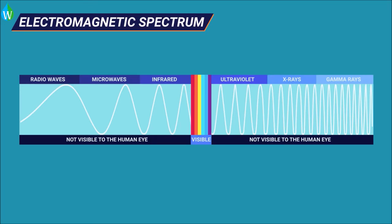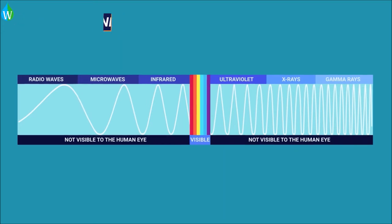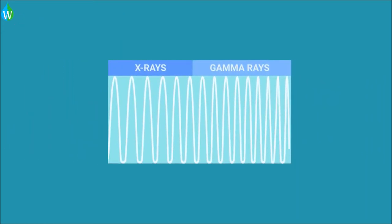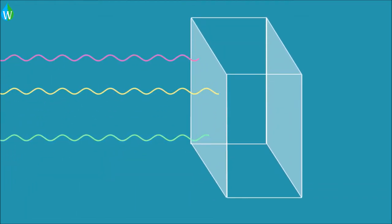To be able to examine the inner workings of an object in detail, we need to look at the part of the spectrum with the shortest wavelengths. It's here where we can find X-rays and gamma rays.